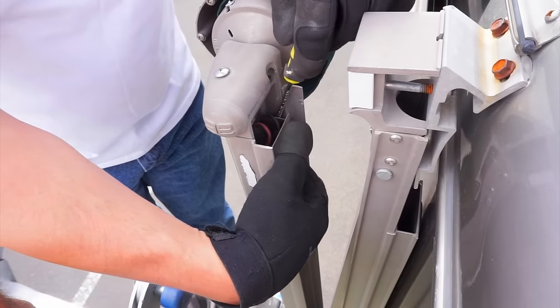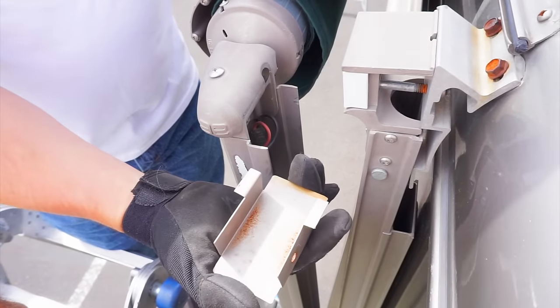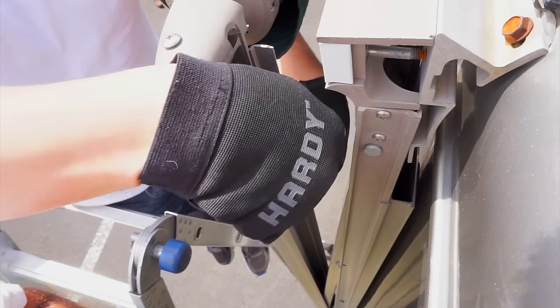At the other end of the awning, pop off the metal cover at the top of the front arm, then unplug the wires that power the motor.